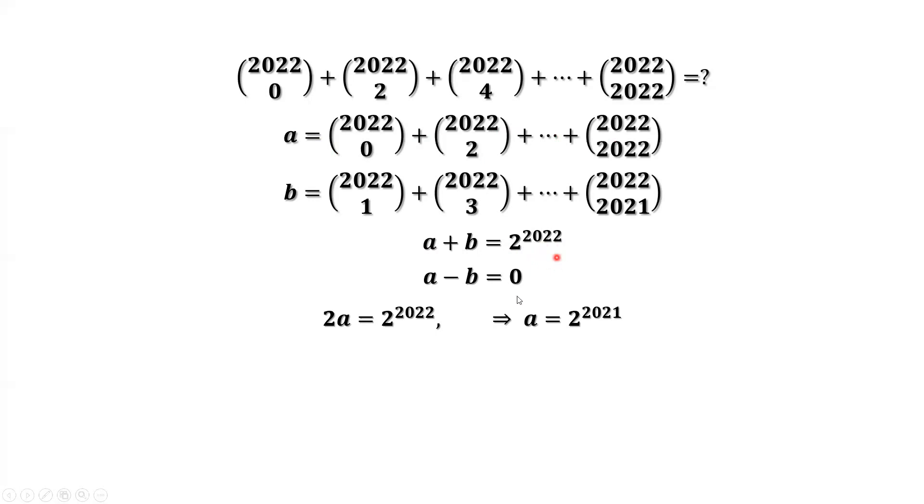Sum of the left hand side, sum of the right hand side. We imply a equals 2 to the power 2021. This is our final result.